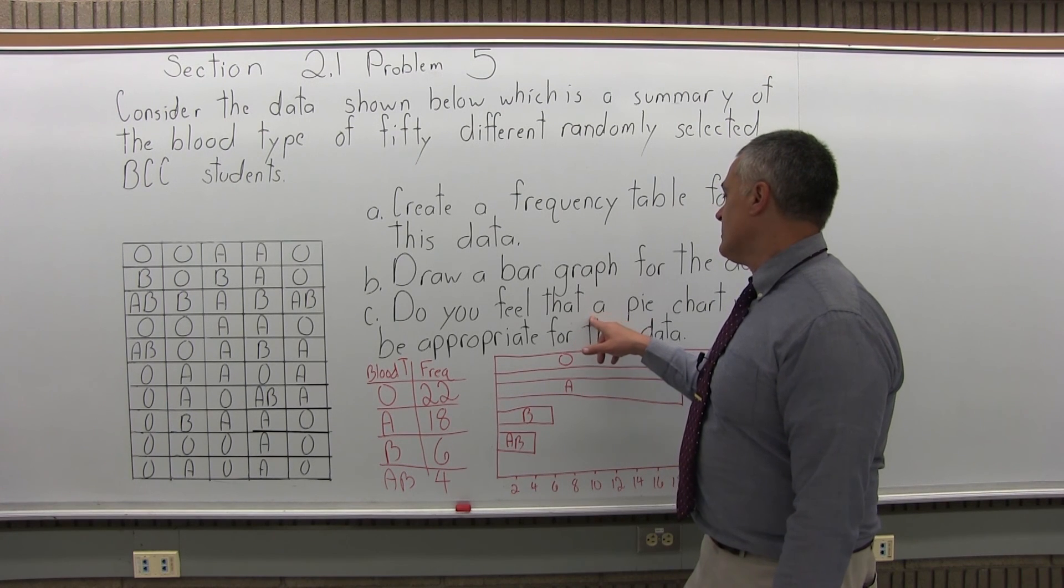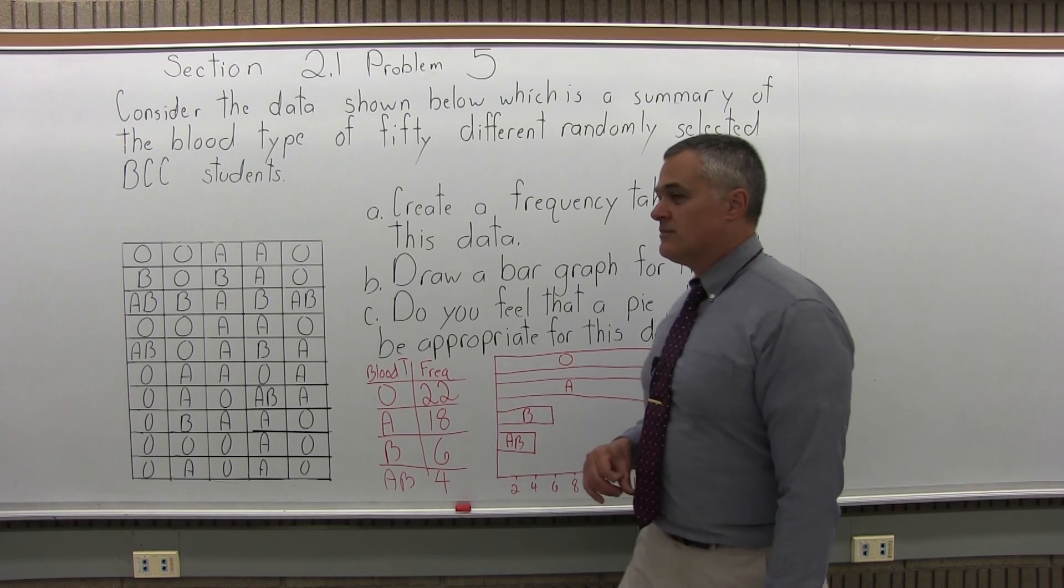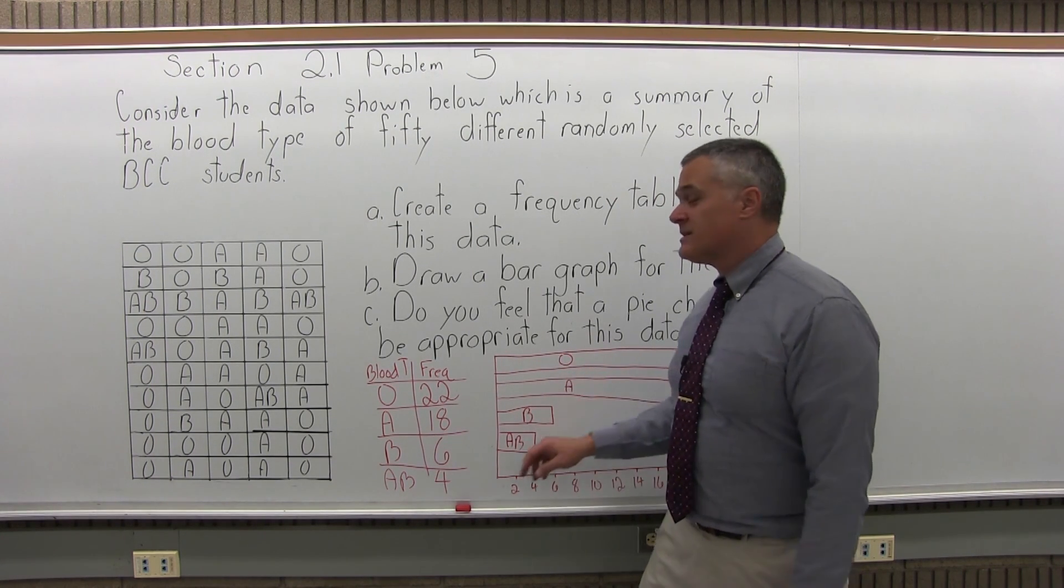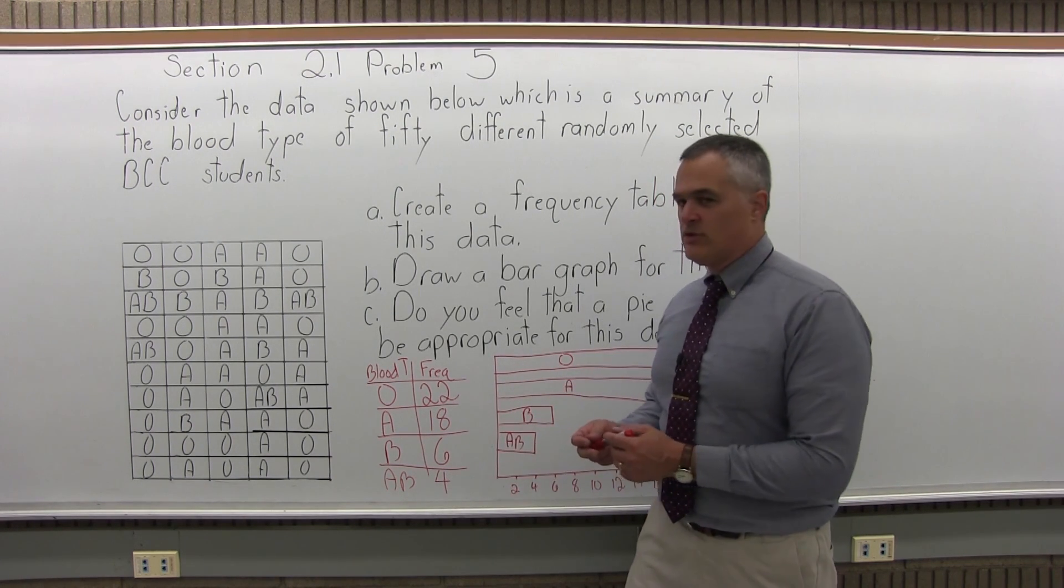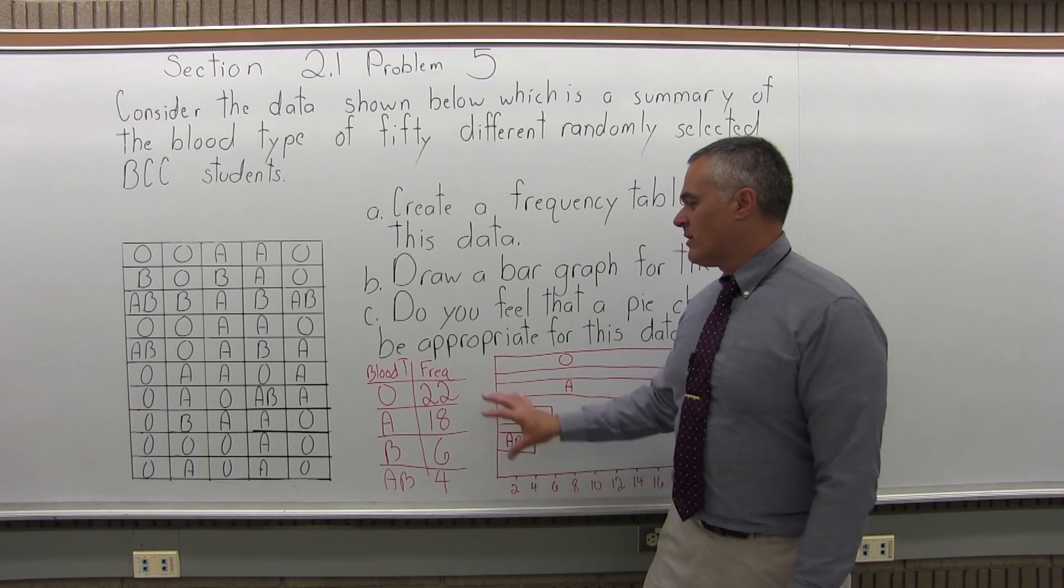Part C. Do you feel that a pie chart would be appropriate for this data? Yes. Because you're not going to have a student with two different blood types at the same time. You wouldn't have that situation where you have two different categories simultaneously. So a pie chart would work out very well for this data.